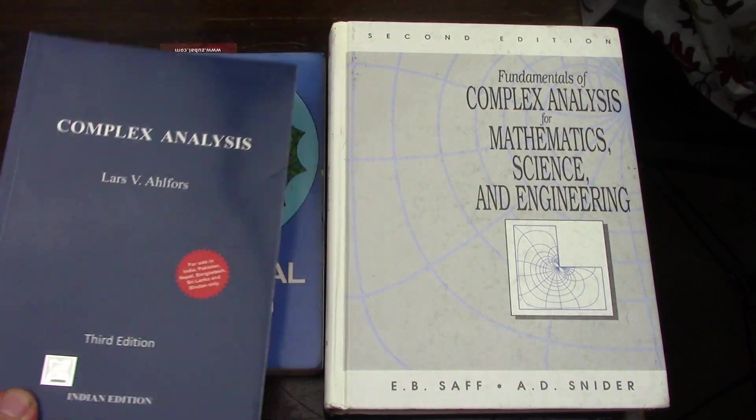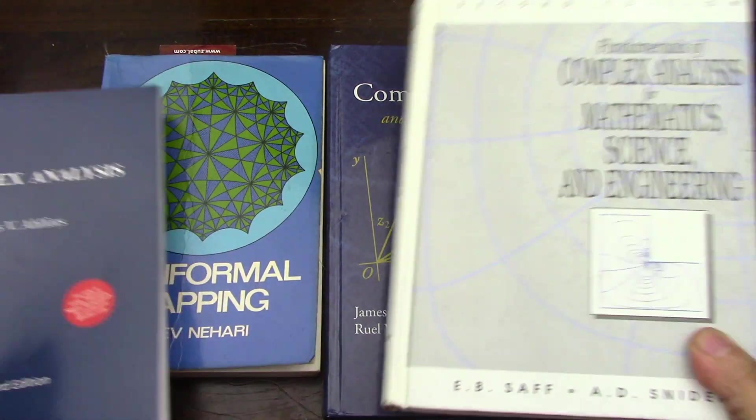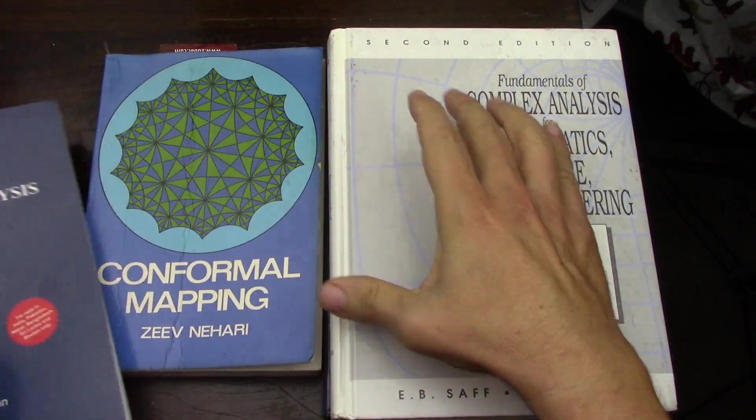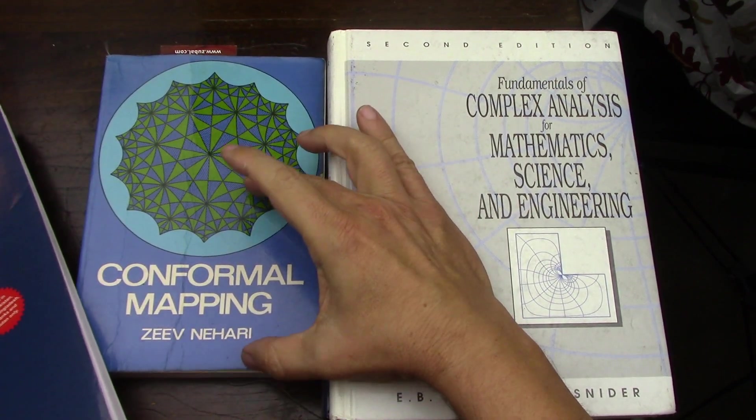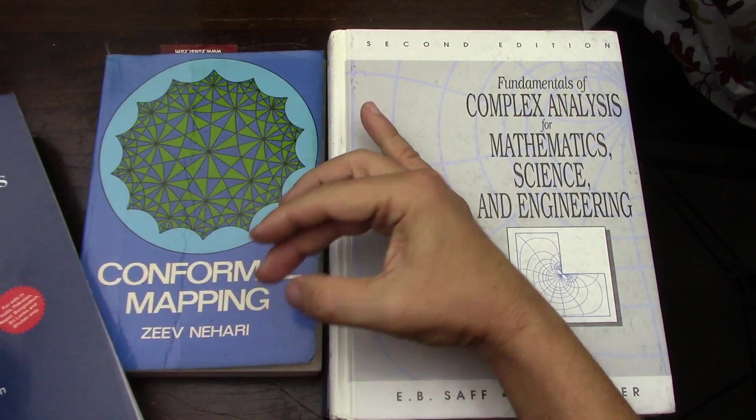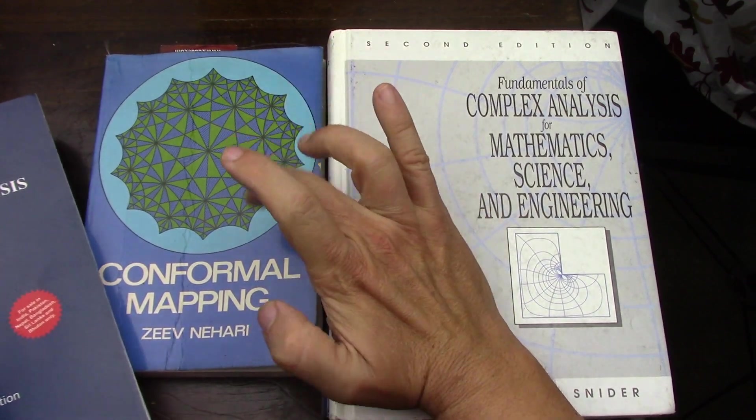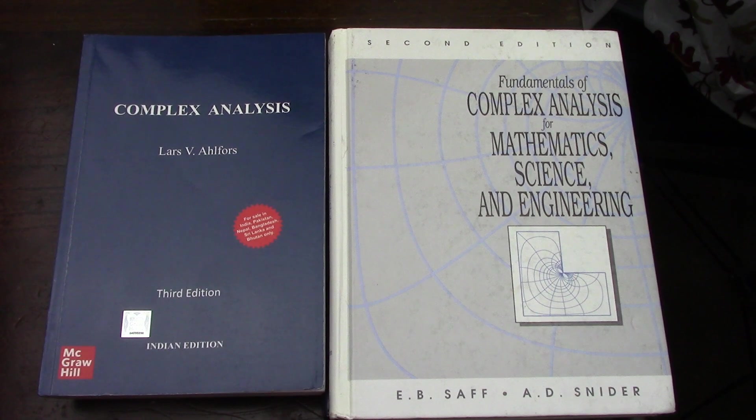The four books are Ahlfors, Saff and Snyder, Churchill and Brown, and then Nahari. Now Nahari is the one of the four that may have a better book out there, but I haven't found it. For conformal mapping and going through harmonic analysis at a basic level, I think this is the book, in my opinion, based on what I've seen.